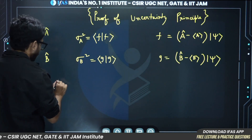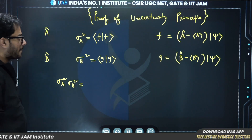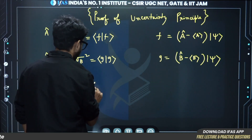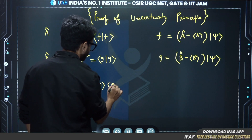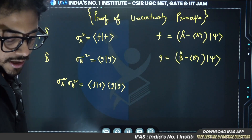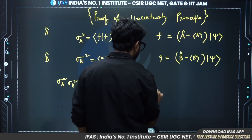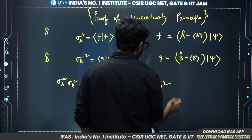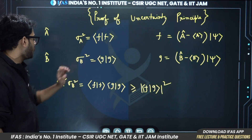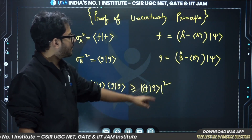Now, if we multiply sigma_A squared and sigma_B squared, this equals ⟨f|f⟩⟨g|g⟩, and from the Schwarz inequality we know this must be greater than or equal to |⟨f|g⟩|² — the mod square of the inner product of f and g.